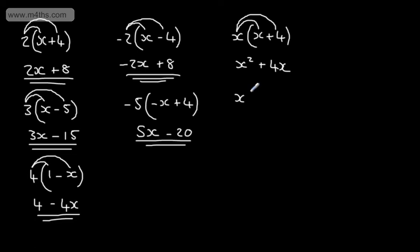If we had now x(2x - 1), x multiplied by 2x is going to give me 2x². x multiplied by -1 is going to give me -x.